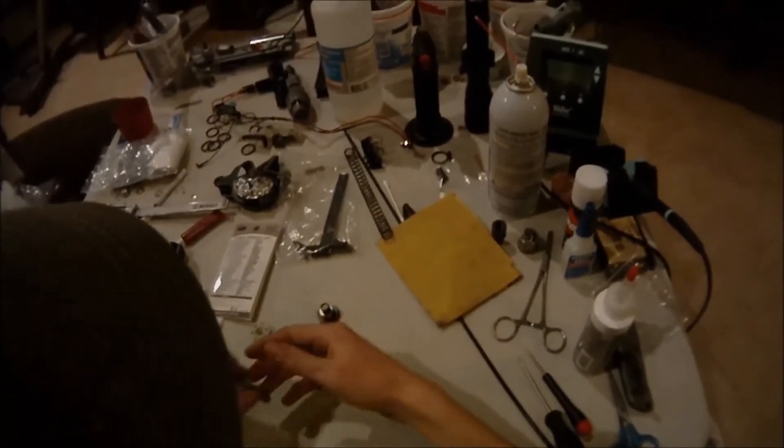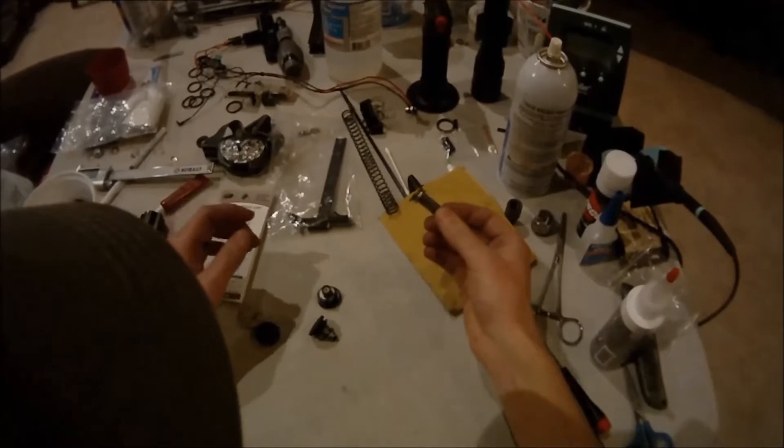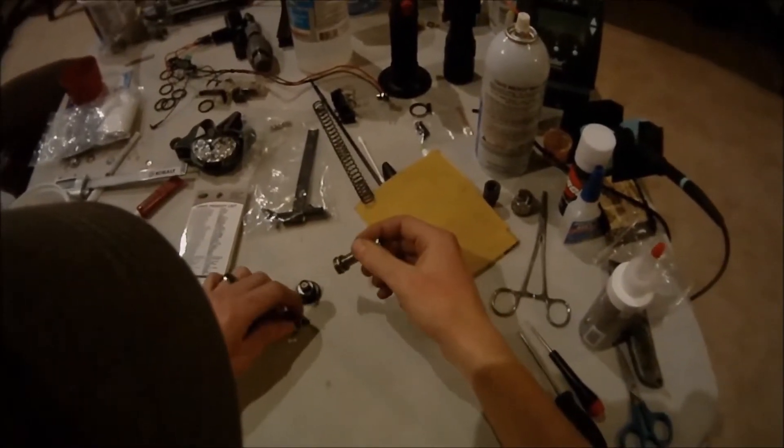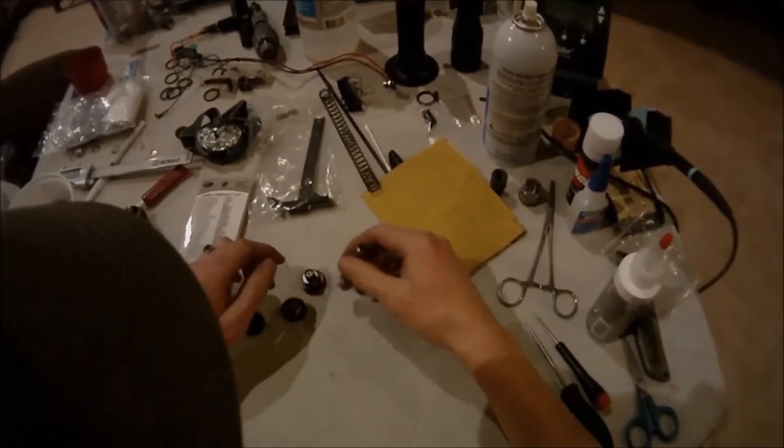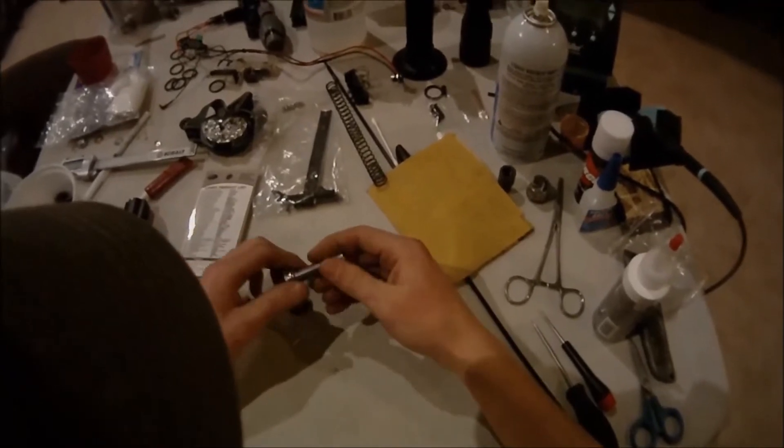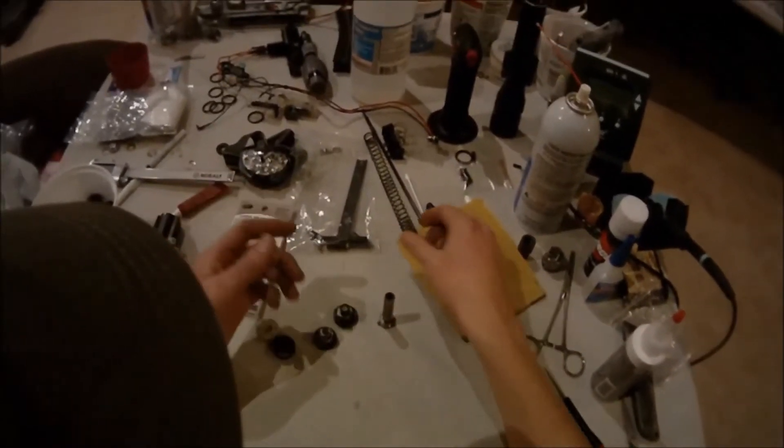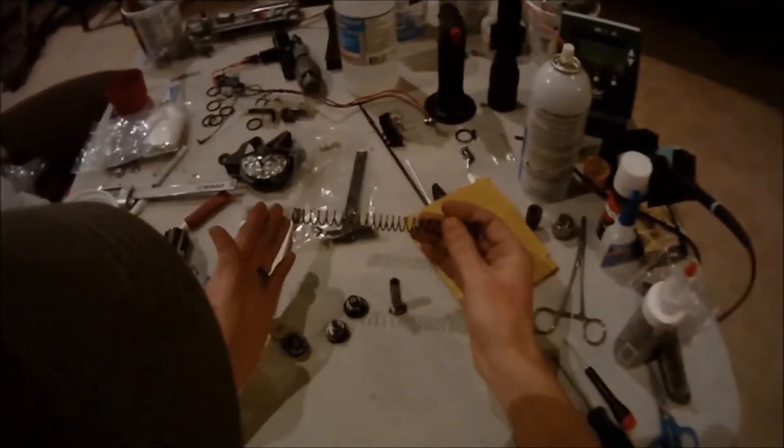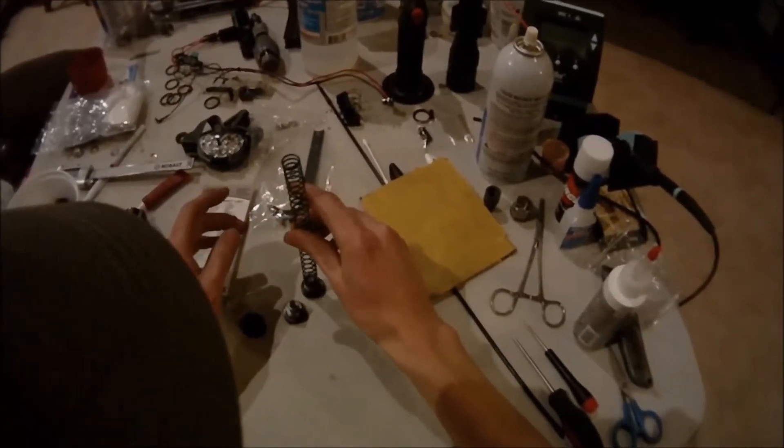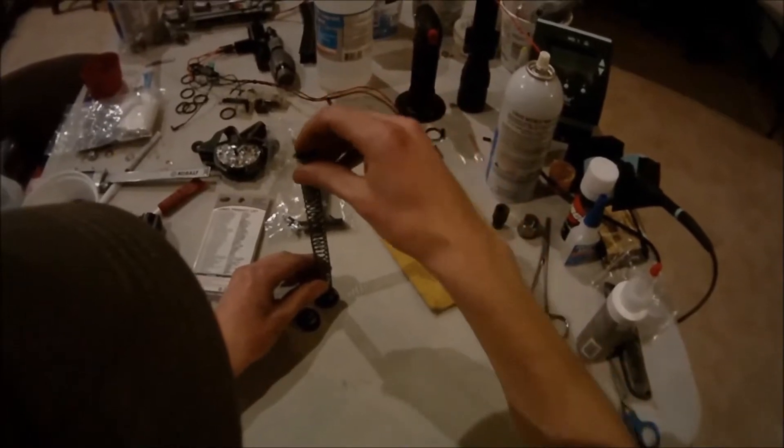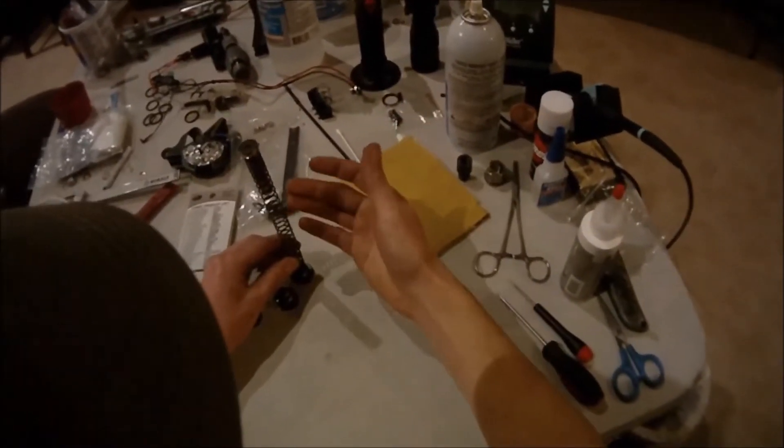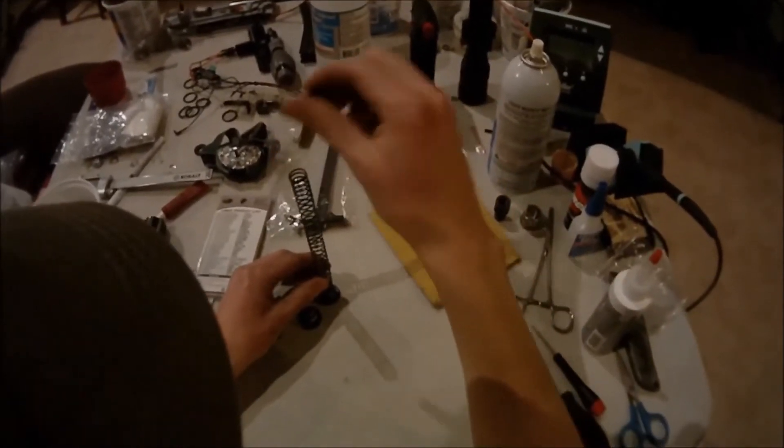The next thing I want to talk about is the bearings on the piston head and also on the spring guide. This is where your spring seat is going to ride - it would basically sit on there just like that. There is a purpose behind this.